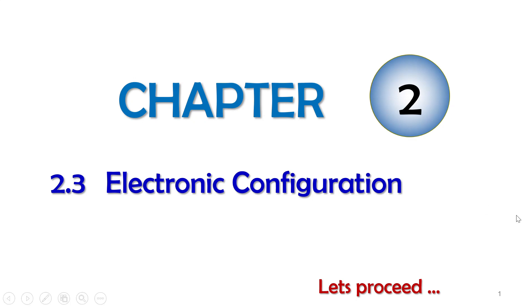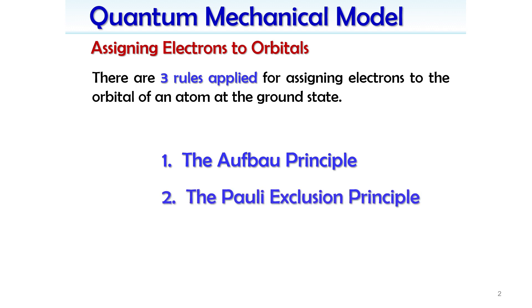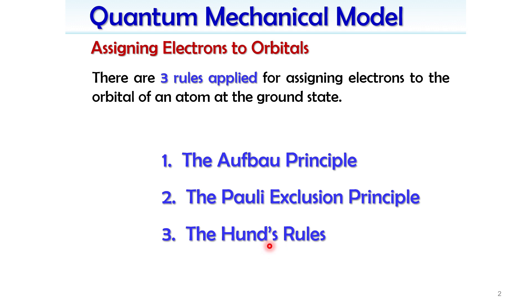Assalamualaikum and hi. This is the last part of Chapter 2, section 2.3: Electronic Configuration. From the previous lesson, we learned to write electronic configurations for atoms and ions, applying three rules: the Aufbau principle, the Pauli exclusion principle, and Hund's rule. According to Aufbau, electrons fill orbitals with lower energy first. Pauli exclusion states a maximum of two electrons per orbital, with different spins. Hund's rule states electrons fill singly in degenerate orbitals before pairing up.